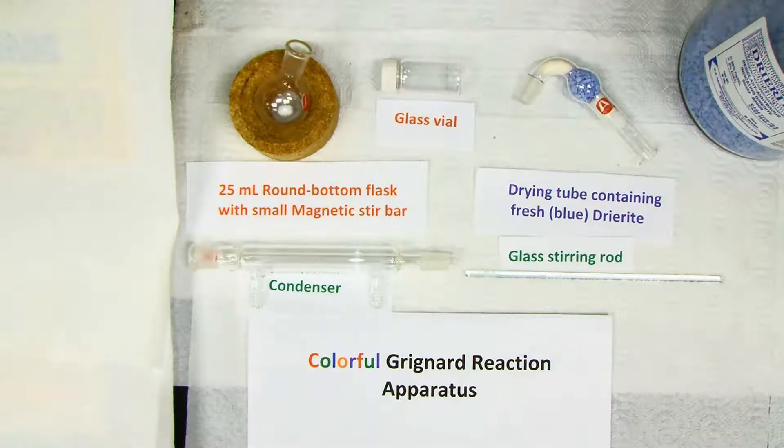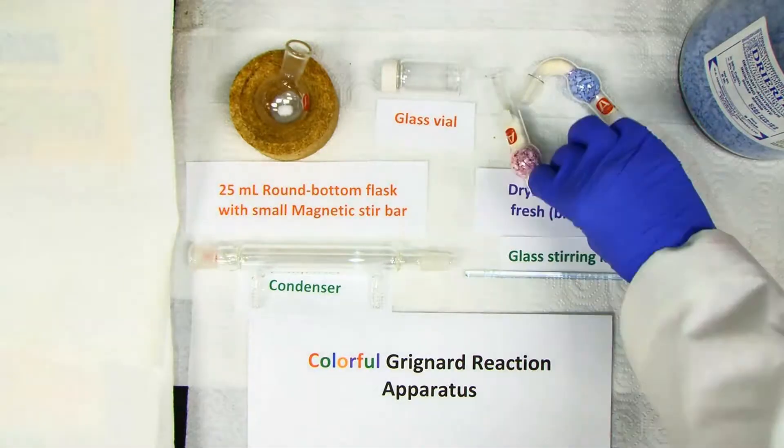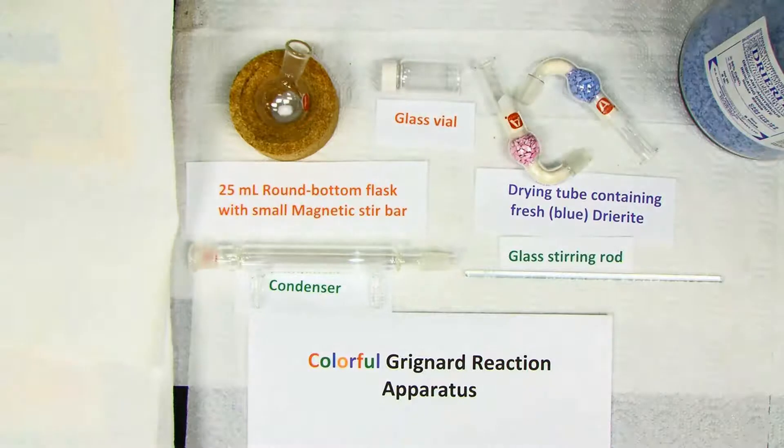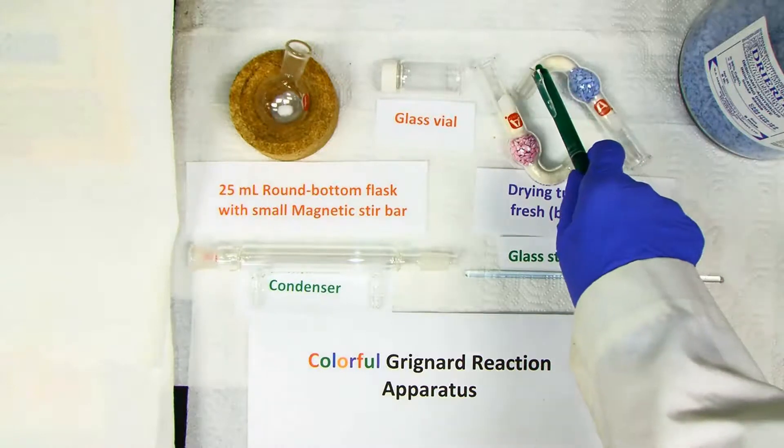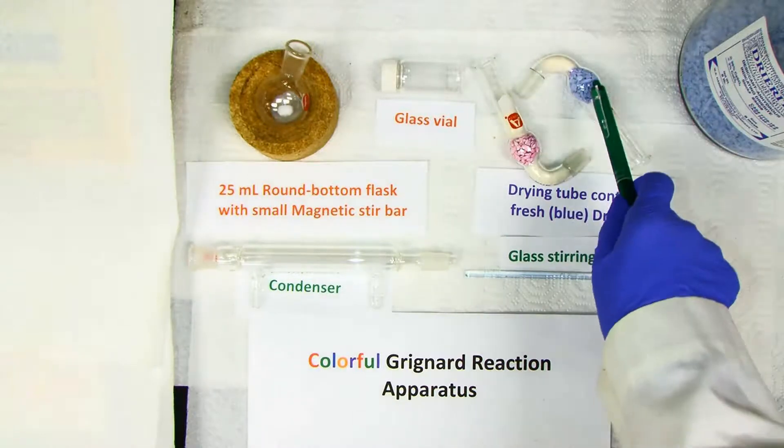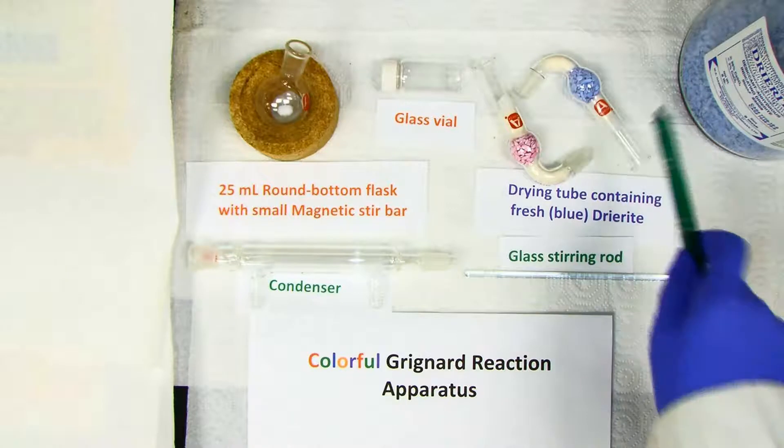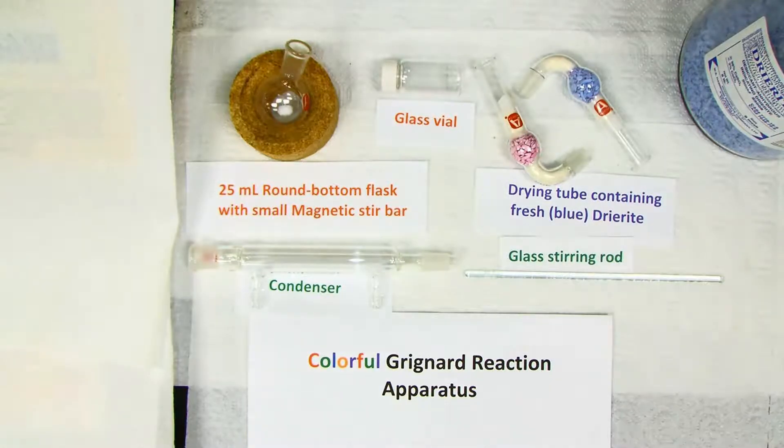So if the tube in your drawer looks like this, then you need to put the pink material into the bottle in the lab so designated and replace it with blue. The drying tube is filled by putting a piece of cotton in the neck, put the Drierite in, and then another piece of cotton. You don't have to pack it tightly.